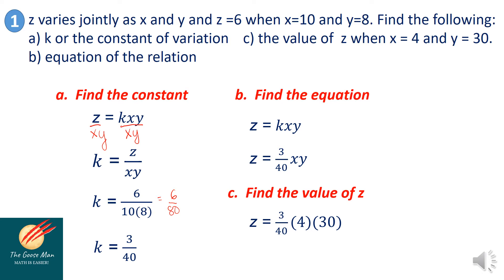Take note that 40 and 30 are divisible by 10, so this simplifies. Then 4 and 4 are divisible by 4. Therefore z is equal to 3 times 3, or z is equal to 9.